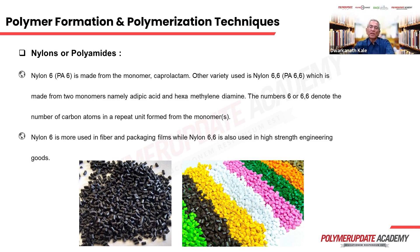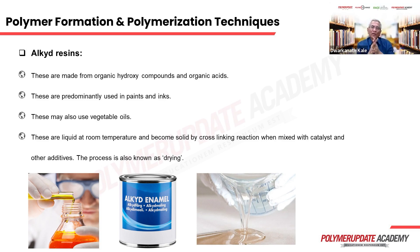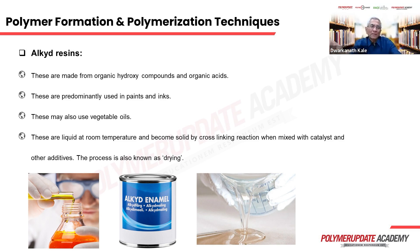So far we have covered thermoplastic materials. Now we look at thermoset resins, covering three or four types. Alkyd resins — the name comes from alkali and acid: hydroxy compounds and organic acids. They are also made from vegetable oils. These are liquid at room temperature and become solid when mixed with certain catalysts and heated. In paints, this is called drying. The final product is solid due to cross-linking and cannot be remelted.